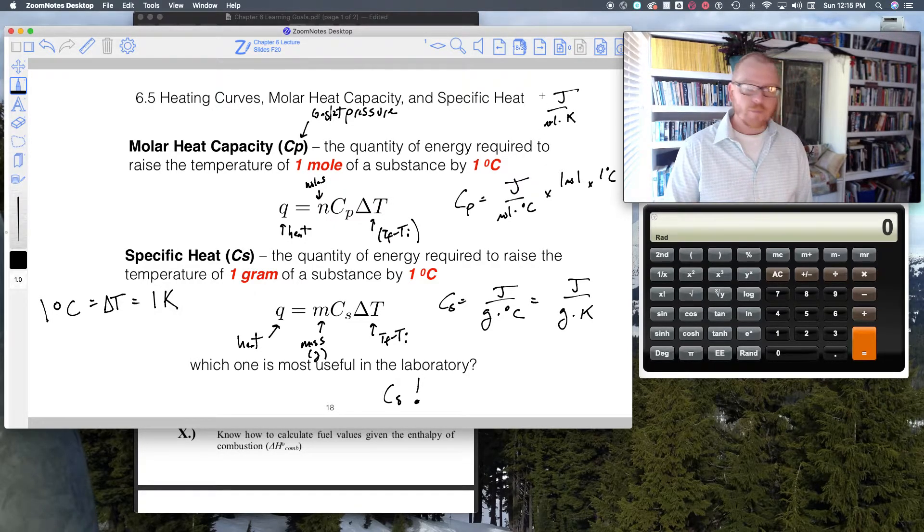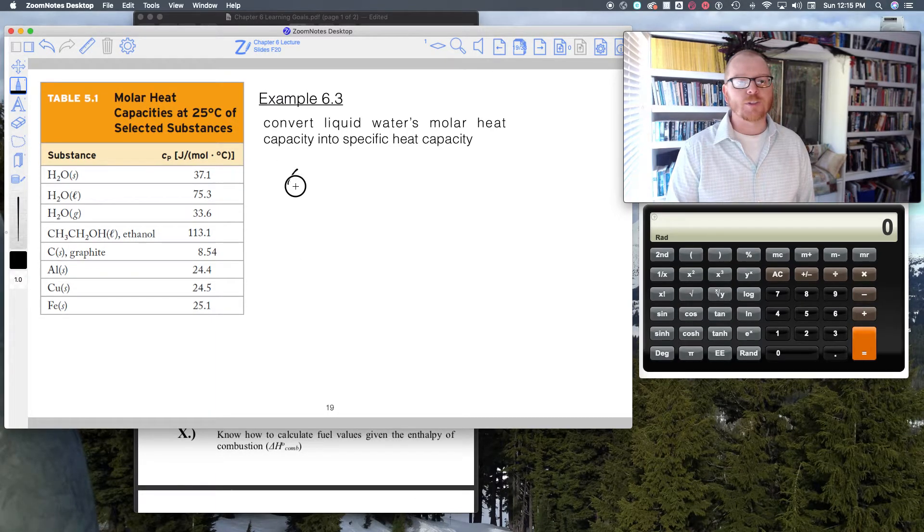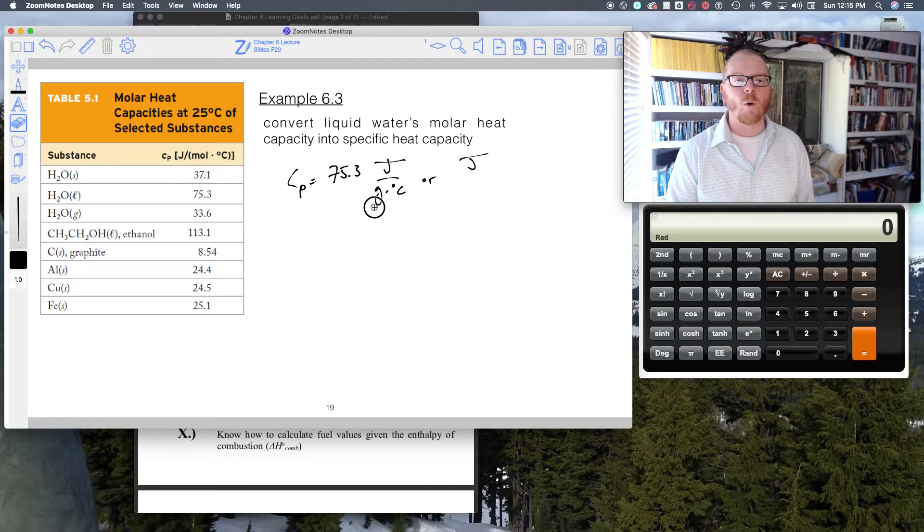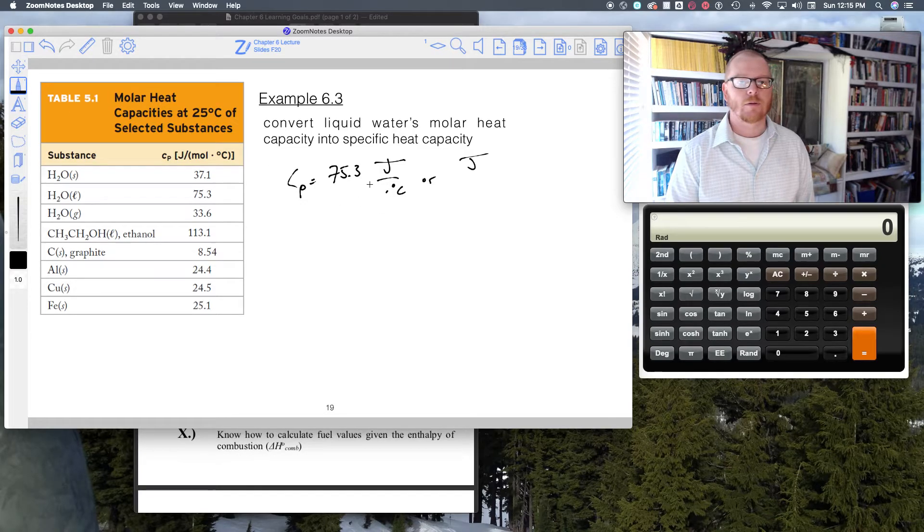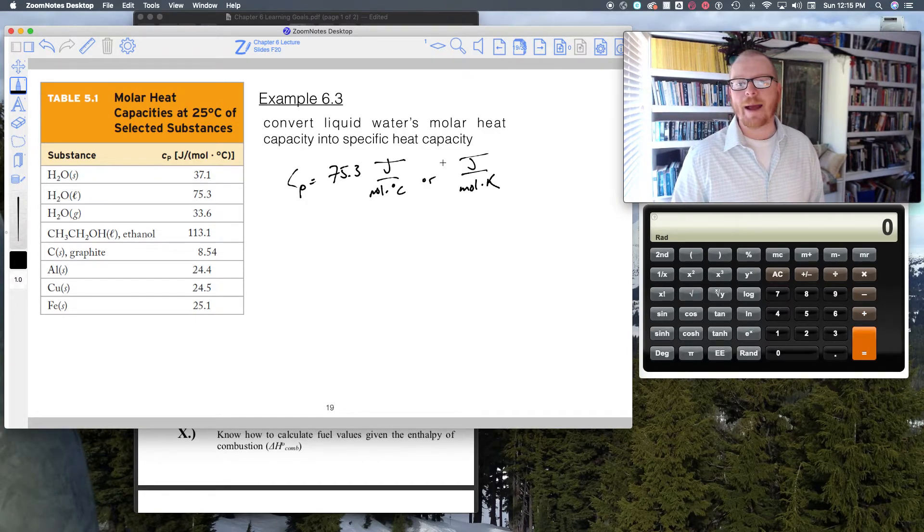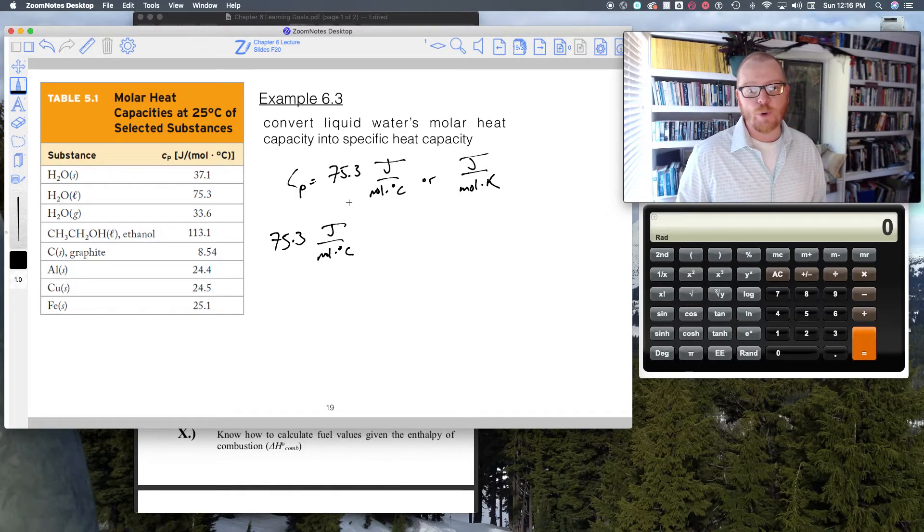Here are some examples: Cp in joules per mole per degree C. I want to point out this quantity of water, 75.3. Cp for water is 75.3 joules per mole per degree C, which is the same thing as joules per mole per Kelvin. Here's an example: convert liquid water's molar capacity into its specific capacity. Just like everything we've done in this class, we can use the process of dimensional analysis to do it. 75.3 joules per mole per degree C is Cp for water. How do I get Cs for water?